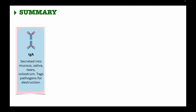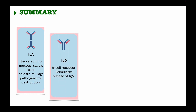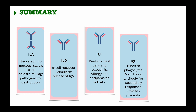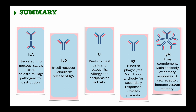In summary: immunoglobulin D uses the B-cell receptor and stimulates the release of immunoglobulin M, though its role is not fully known. Immunoglobulin E binds to mast cells and basophils, involved in allergic and antiparasitic activity. Immunoglobulin G binds to phagocytes, is the main blood antibody for secondary responses, and is the only immunoglobulin that crosses the placenta. Immunoglobulin M fixes the complement, is the main antibody of the primary response, uses the B-cell receptor, and provides immune memory.